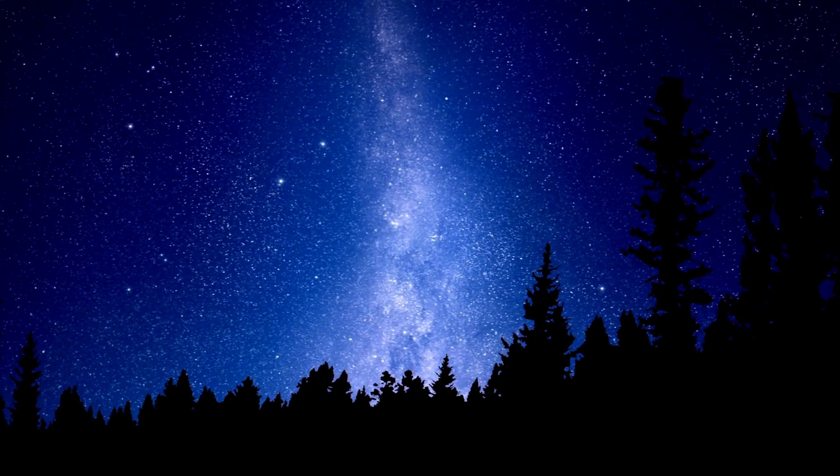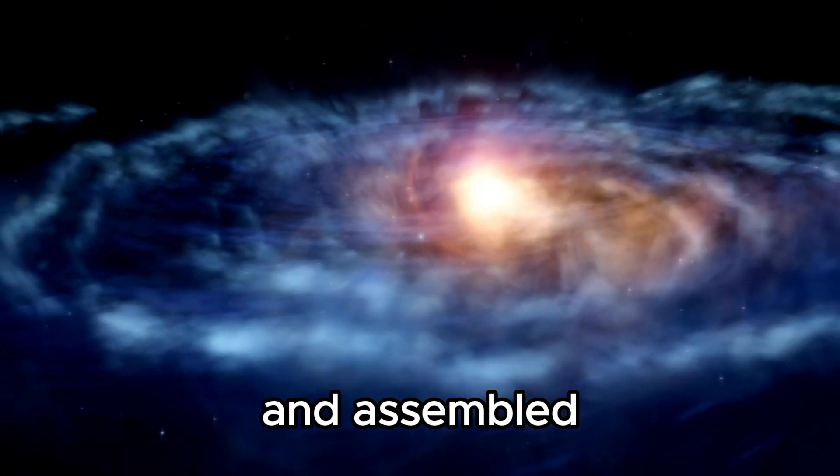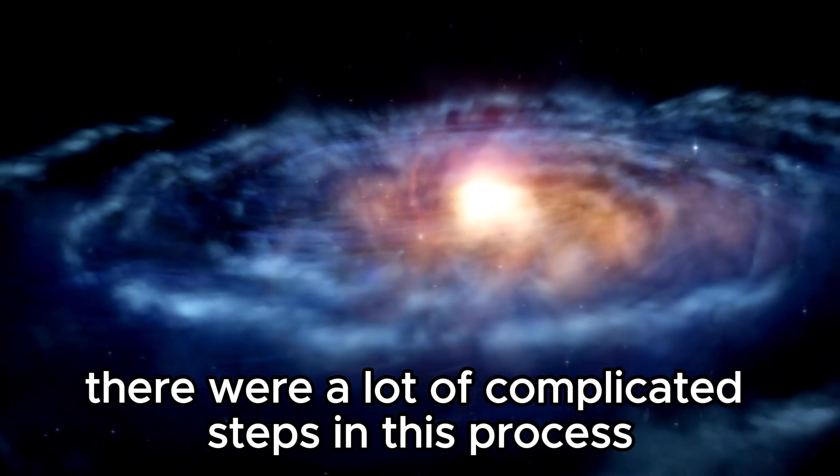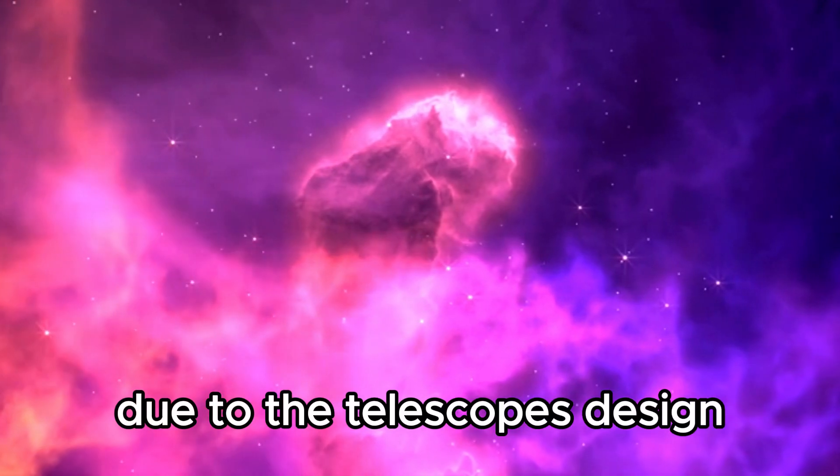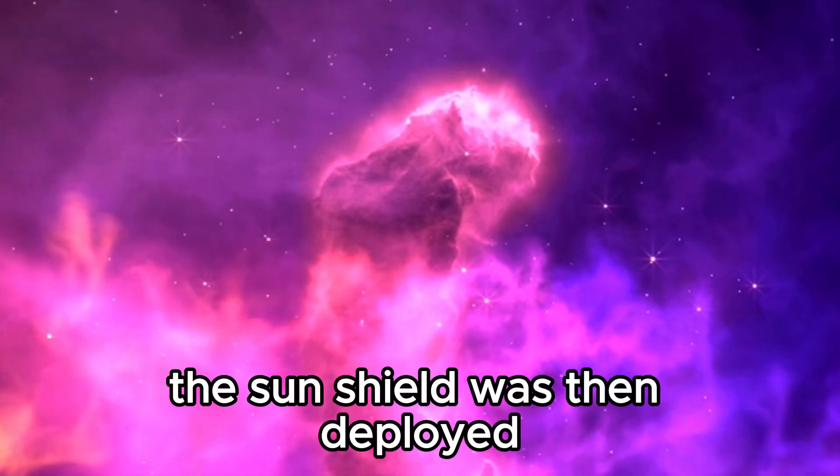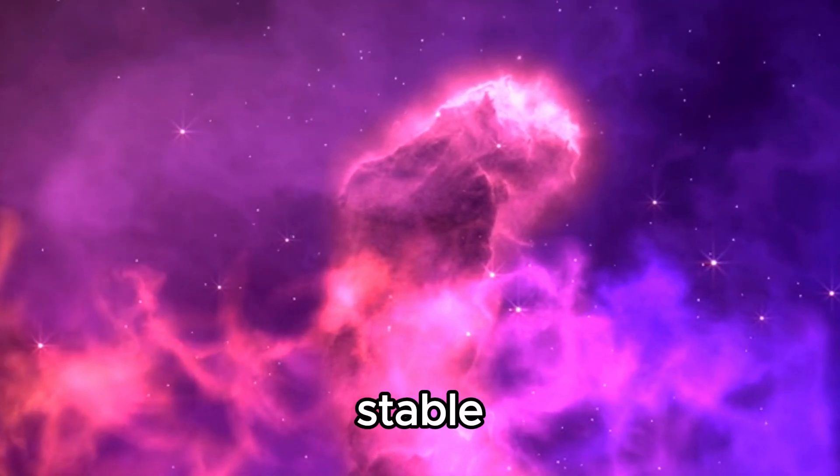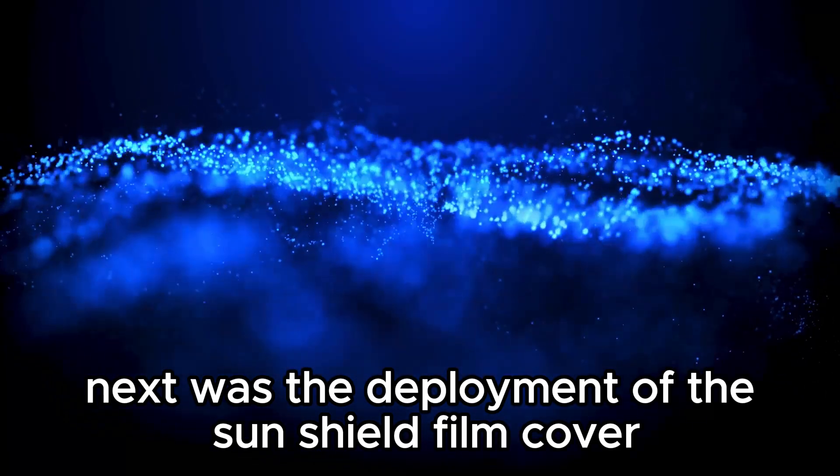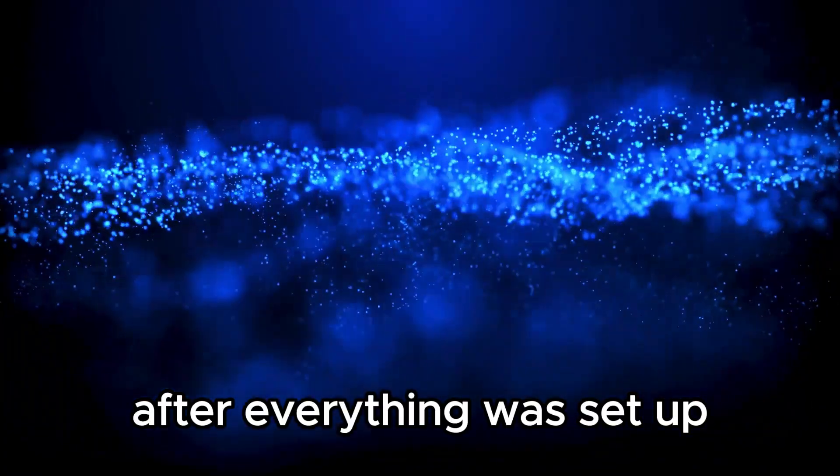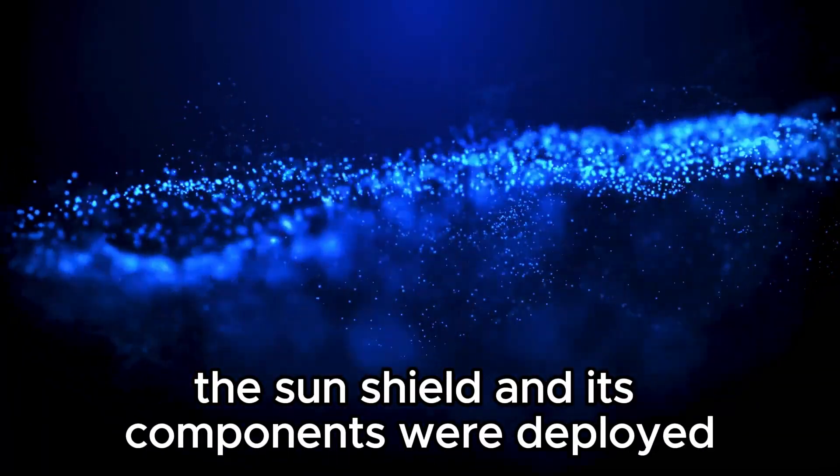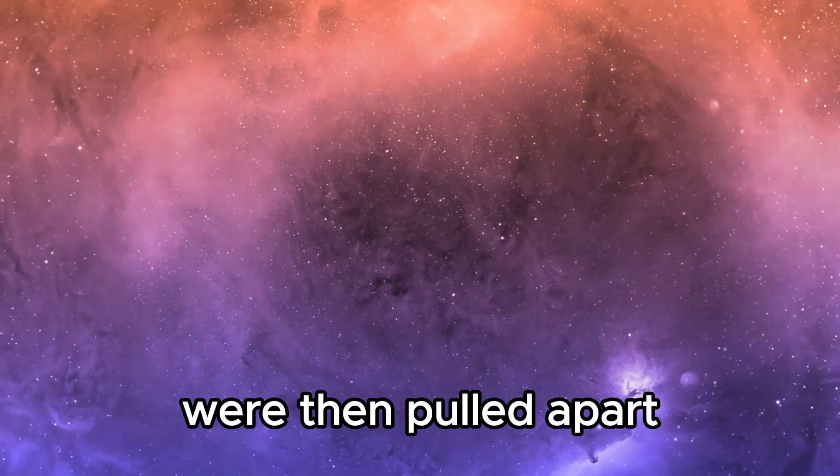On the fourth day, the payload and the instrument package were moved to their final position and assembled. There were a lot of complicated steps in this process, but everything went smoothly due to the telescope's design. The sunshield was then deployed. The sunshield layers worked to keep the telescope stable. Next was the deployment of the sunshield film cover, which revealed the tennis court-sized sunshields. After everything was set up, the sunshield and its components were deployed. The five pieces of the sunshield were then pulled apart.